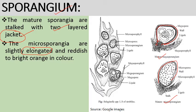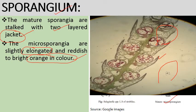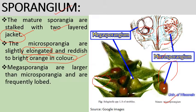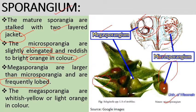The microsporangia are slightly elongated and reddish to bright orange in color. In a cross-section of the strobulus of Selaginella, the basal portion shows microsporangia where microspores are formed, and the upper portion contains megasporangia. The megasporangia are larger in size compared to microsporangia and are frequently lobed.